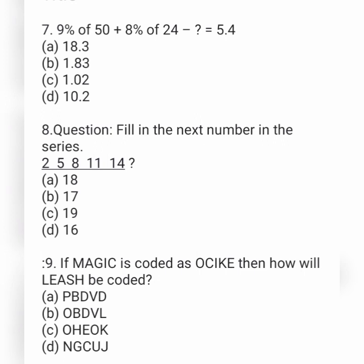Next question: 9% of 50 plus 8% of 24 minus a number equals 5.4. What is that number? Option A is 18.3, option B is 1.83, option C is 1.02, and option D is 10.2.